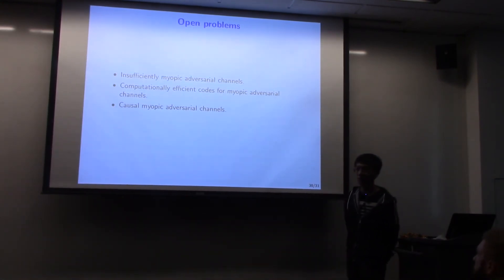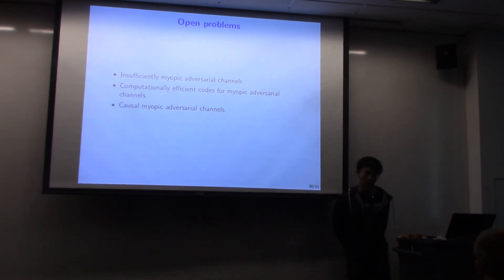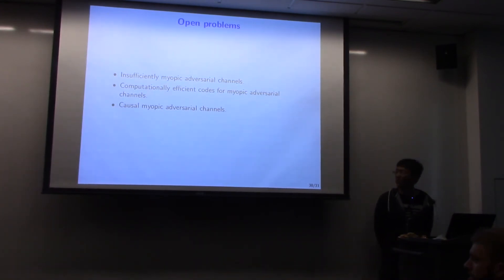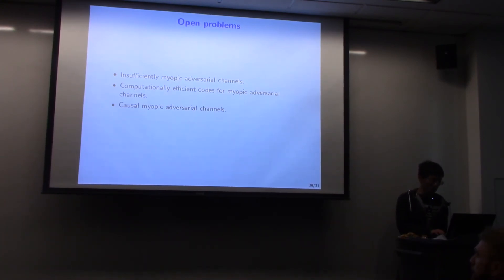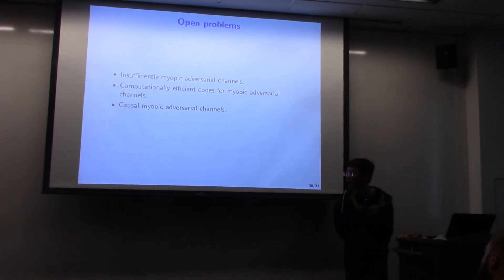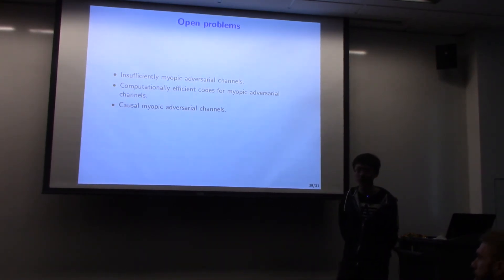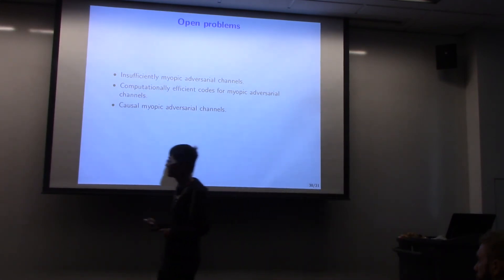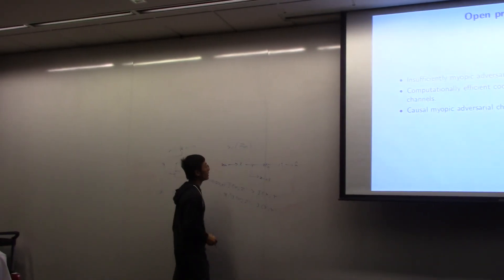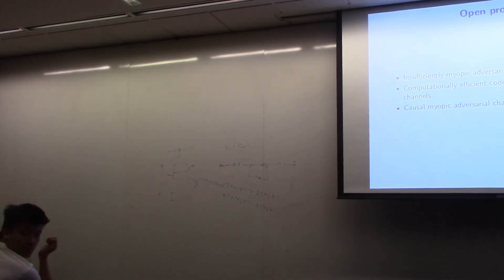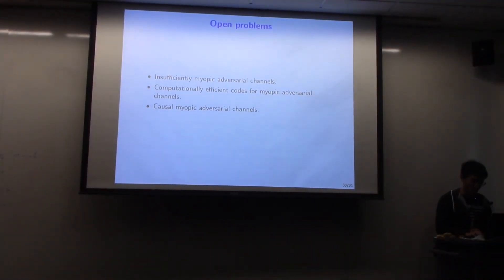The second open problem is computational efficiency — can we construct computationally efficient codes for such channels? Winkert and Adam Smith can construct computationally efficient codes for oblivious channels; can we do it for myopic channels? Third, we can impose more constraints on the adversary — for example, the i-th entry of his attack vector can only be a function of his observation up to that point, something like a streaming adversary. Thank you.